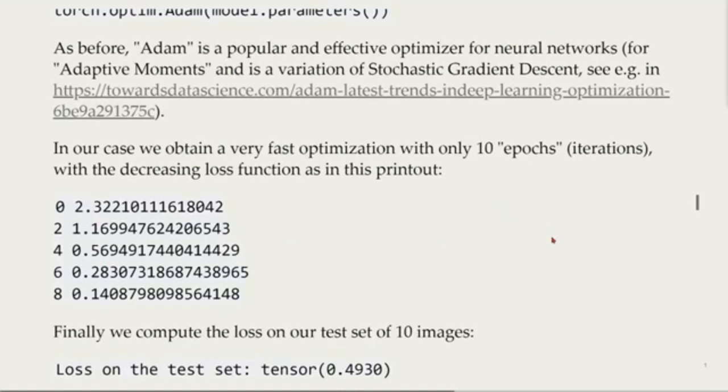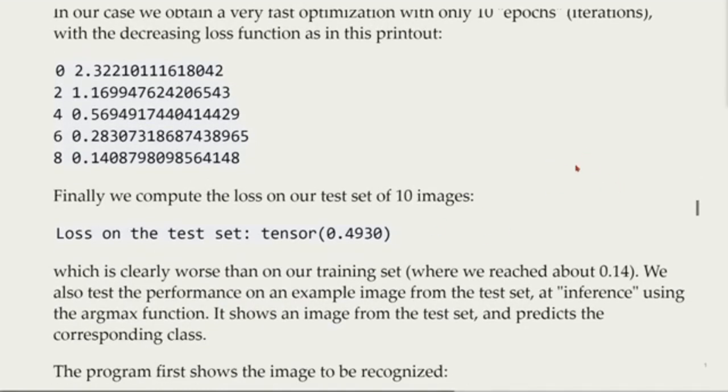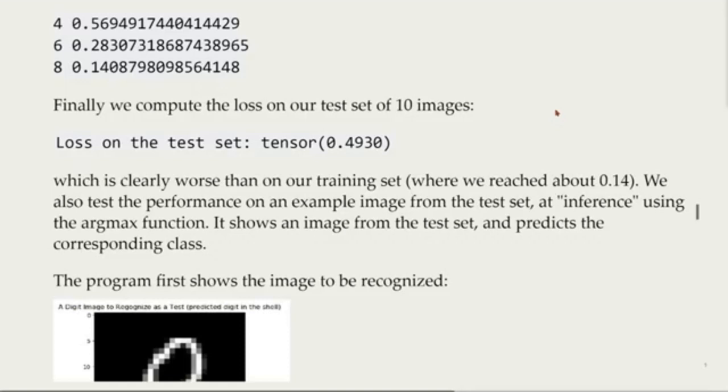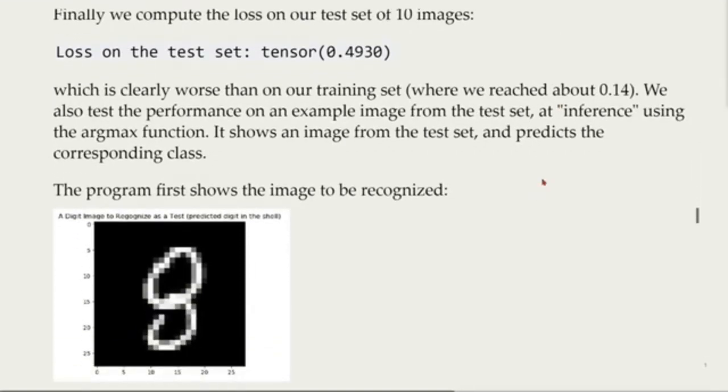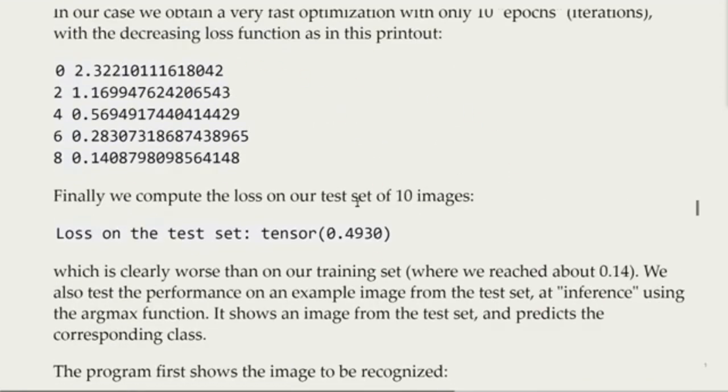Finally we will compute the loss on our test set of 10 images, and we will see that it's clearly worse than our training set. Here we reached 0.14 loss on the training set, and from the test set we have 0.49. We will also test the performance on an example image from the test set and predict the corresponding class. So we give it an image and see what is predicted. This is just an example of one run.